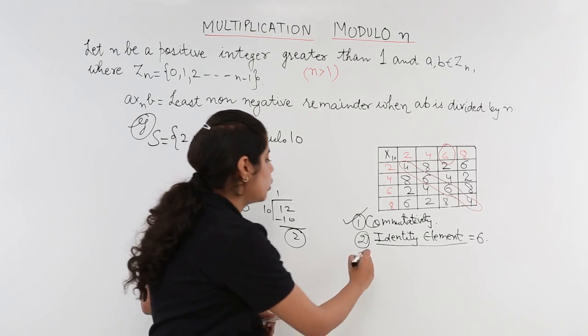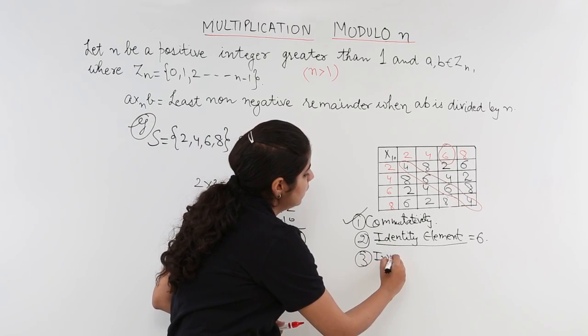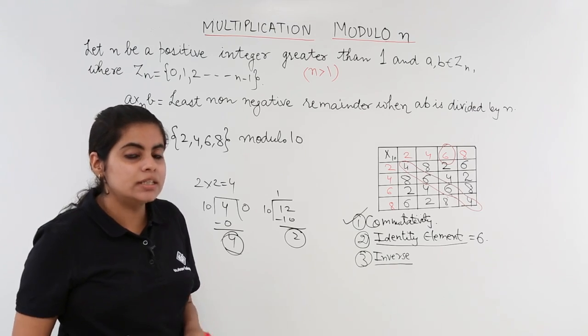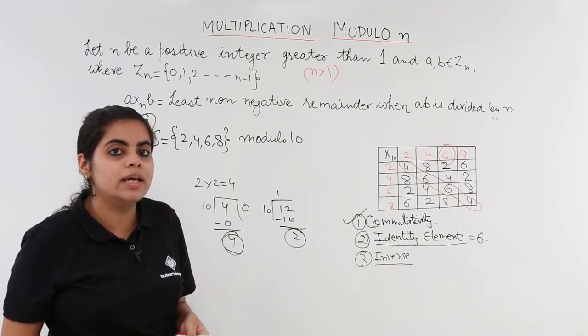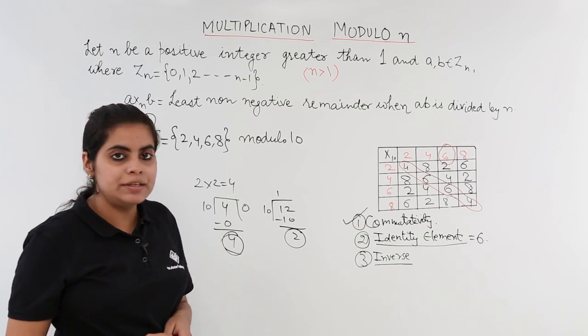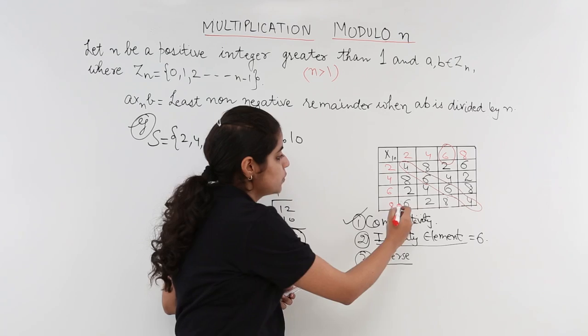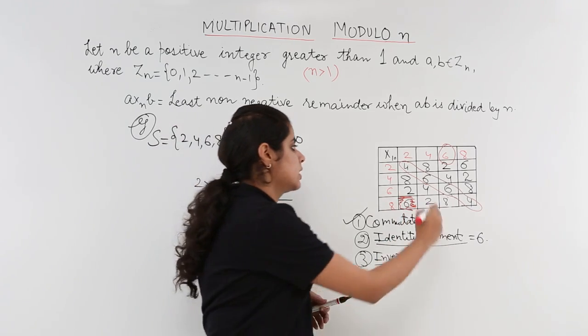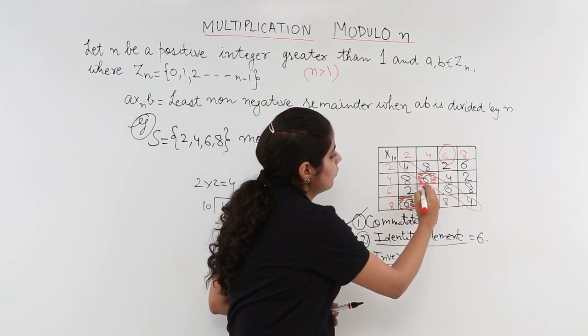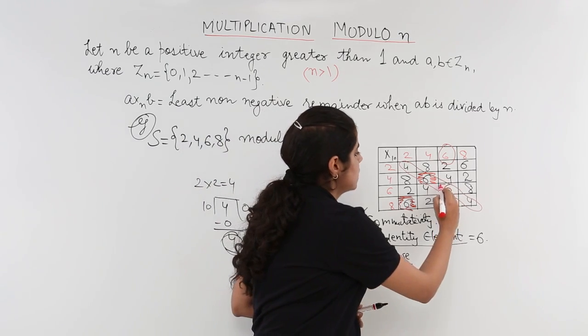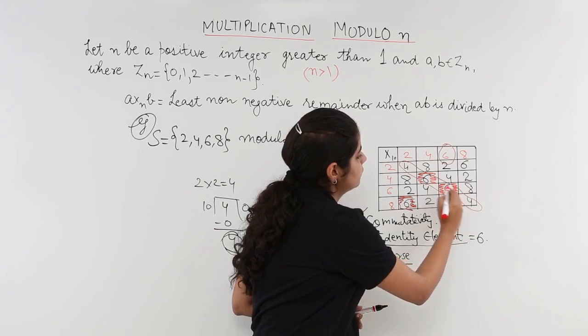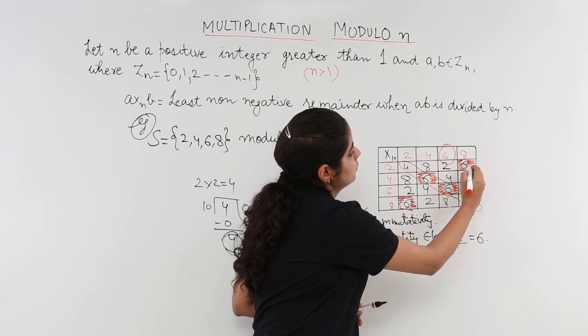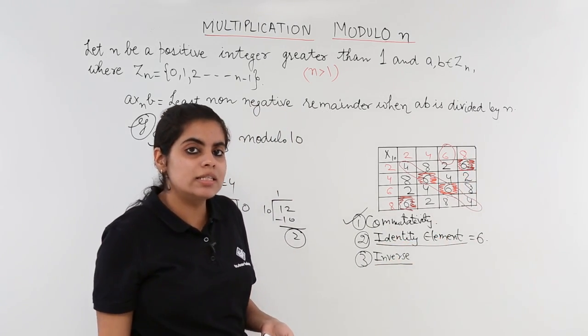So what was needed? As we started in the previous video inverse is found out with the help of identity element. And what is the identity element? 6. So shade the box related to 6. 6 is here. Where else is 6? 6 is here. Where else do we find 6? 6 is here in this box. Where else is 6? 6 is here. Now we can easily find out what is the inverse.